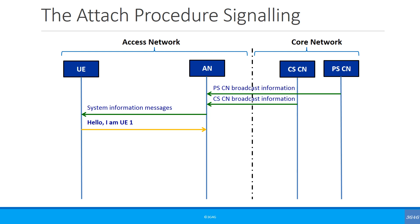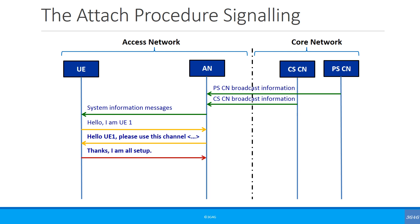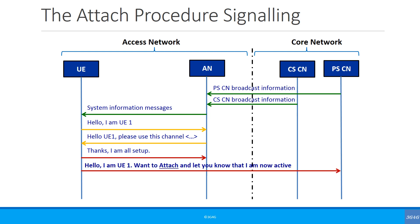Assuming that this message reaches the access network, the access network will respond saying, can you use this particular dedicated channel? Once the UE receives this message, it can set up this dedicated channel and communicate back on the dedicated channel. Once the UE is connected to the access network, it can communicate with the core network. It will send an attach message to let the PS core know that it's active and wants to attach to the PS core network.